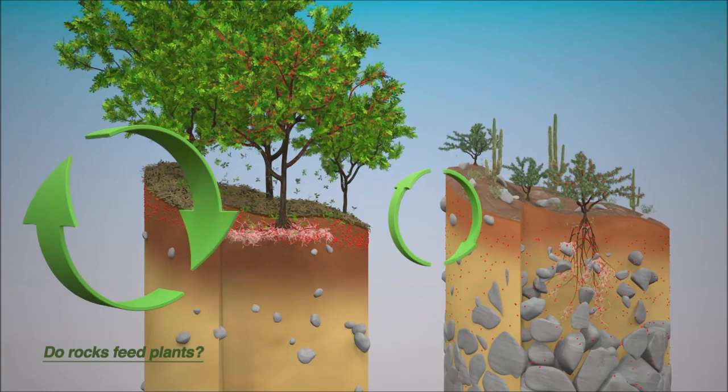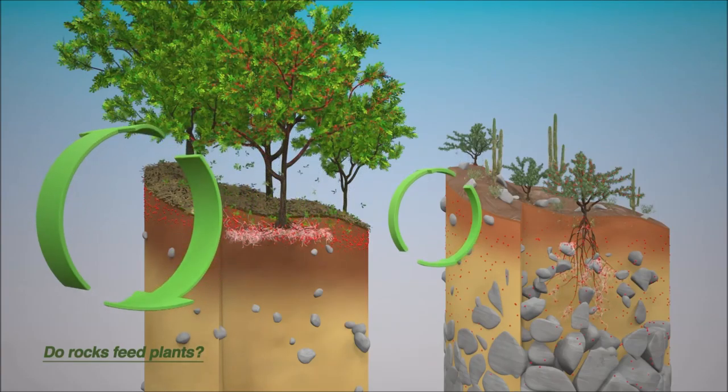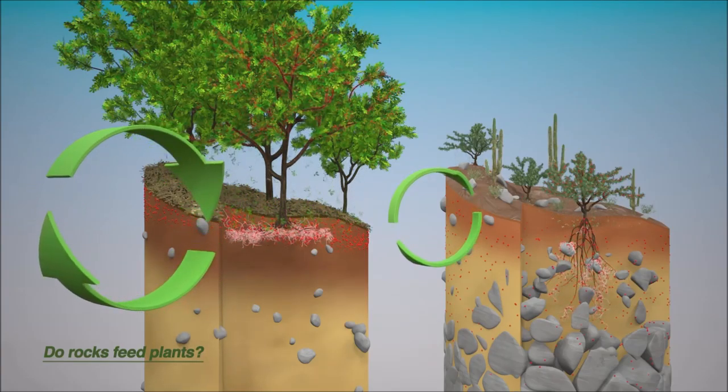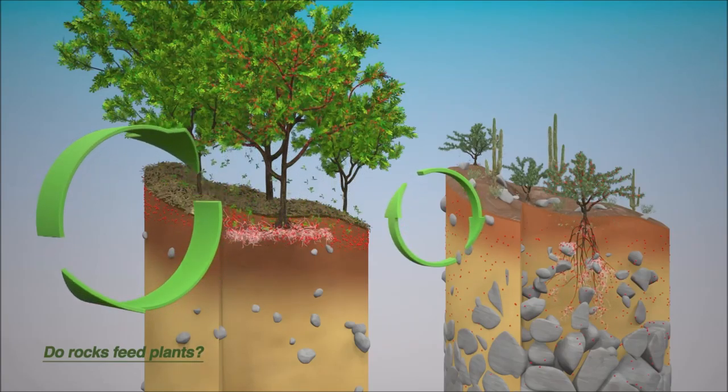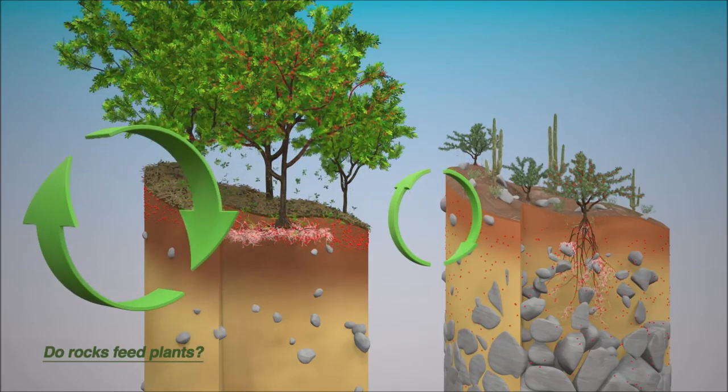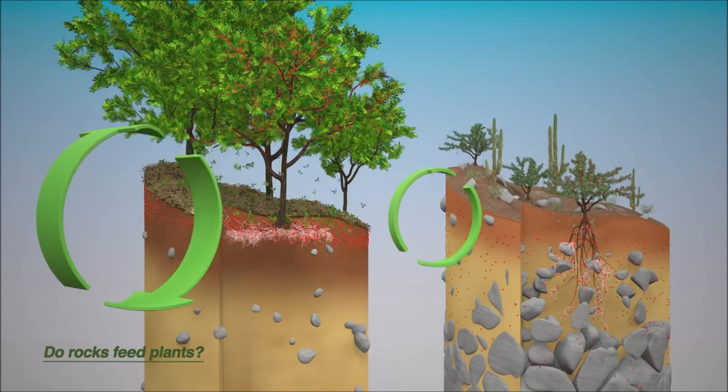In the dry area, here on the right side, with sparse and slowly growing vegetation, the nutrients are mainly supplied by uptake from the rock. This is the fundamental difference between element cycles in ecosystems of different climate zones.